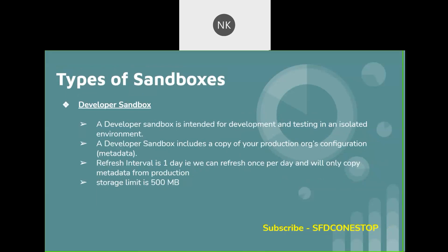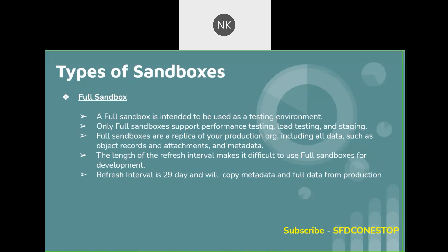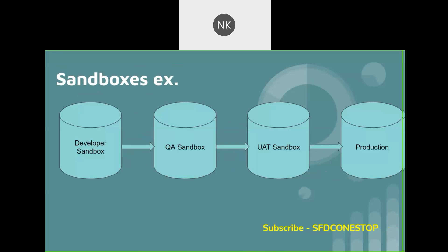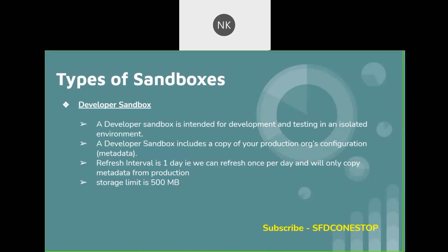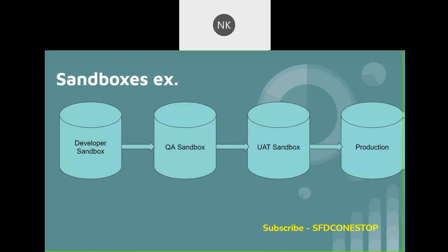According to your business use case, you can create a developer sandbox, developer pro, partial copy, or full copy sandbox. For example, if you have an org where you want to do development, you can use a developer or developer pro sandbox. For QA testing, you can use a developer pro or partial copy sandbox. And if you want your business to do end-to-end testing, you can create one full copy sandbox and give access to all your business users — since the full copy sandbox is an exact replica of your production, it is always best practice to use it for user acceptance testing, performance testing, or load testing.